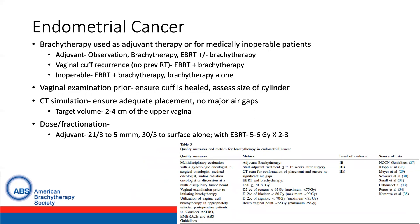With respect to endometrial cancer, brachytherapy is commonly used as adjuvant therapy or in the setting of medically inoperable patients. With respect to adjuvant treatment following surgery, options include observation, brachytherapy, or external beam with or without brachytherapy. In the setting of a vaginal cuff recurrence having not previously received radiation, treatment is commonly external beam radiation as well as brachytherapy. While in the inoperable setting, brachytherapy alone or in combination with EBRT can be considered. With regards to quality measures, a multidisciplinary evaluation was recommended, along with vaginal examination prior to ensure that the cuff is healed, also to allow for assessment of the size of the cylinder. CT simulation was recommended to ensure adequate placement of the vaginal cylinder and to ensure no major air gaps, with a target volume of the proximal two to four centimeters of the vagina.